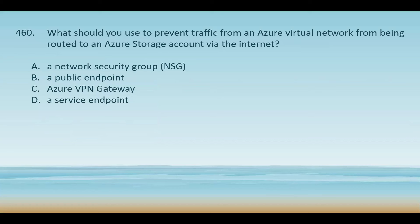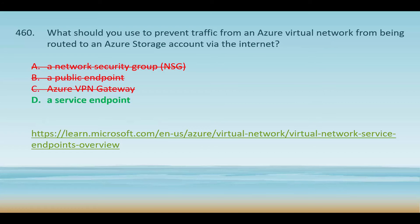NSGs help control inbound and outbound traffic at the subnet or NIC level but do not guarantee that traffic to a storage account stays off the internet, so that is an incorrect choice. A public endpoint exposes the service to the public internet, which contradicts the goal. Azure VPN Gateway is used to connect on-premise networks to Azure and is not relevant to restricting traffic to storage accounts. The correct answer is option D, a service endpoint. A service endpoint allows you to connect Azure services like Azure Storage directly to an Azure virtual network without routing traffic over the public internet, ensuring traffic stays within the Azure backbone network, enhancing security and performance.